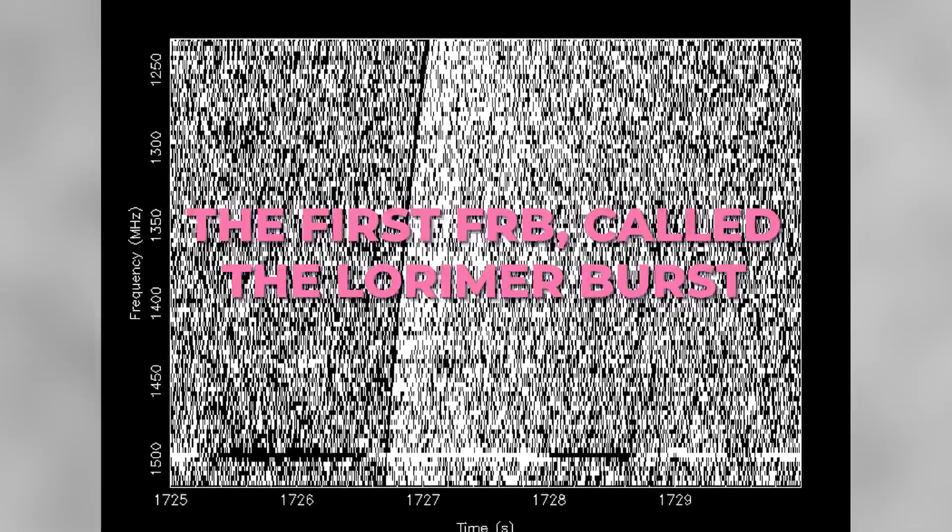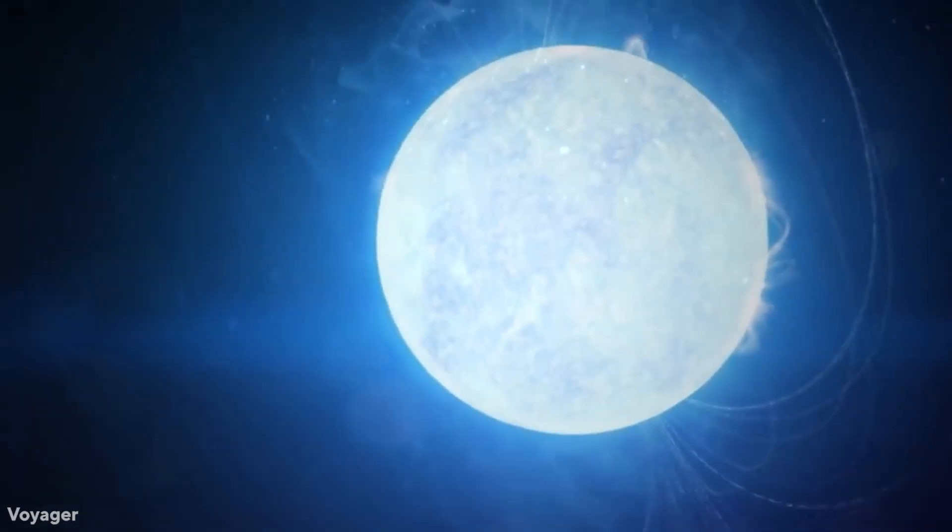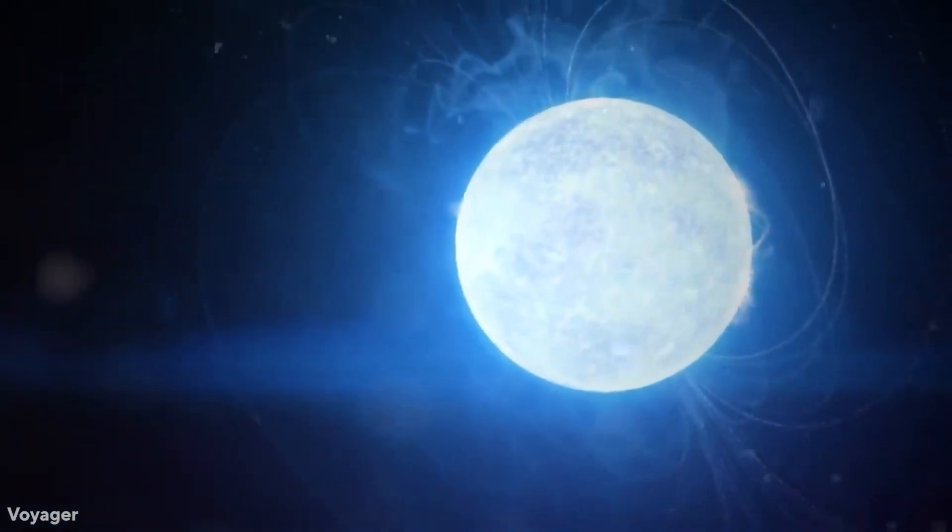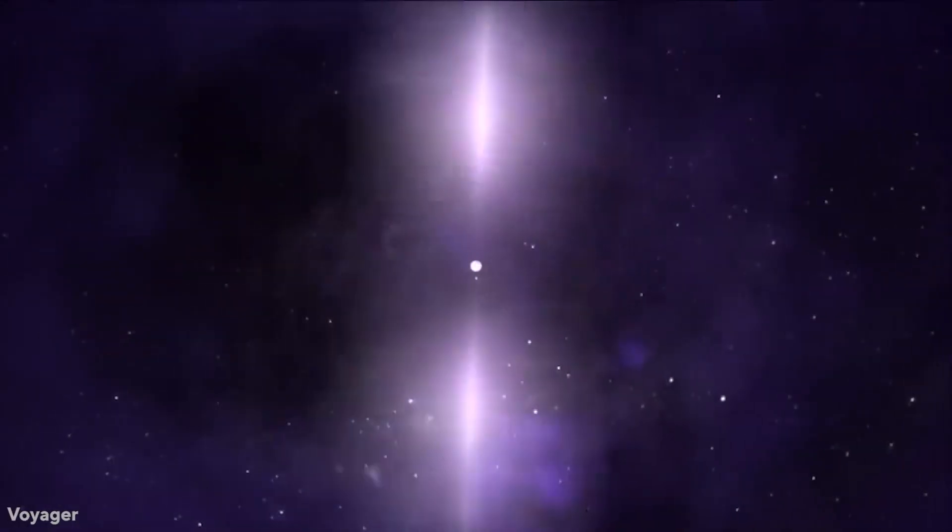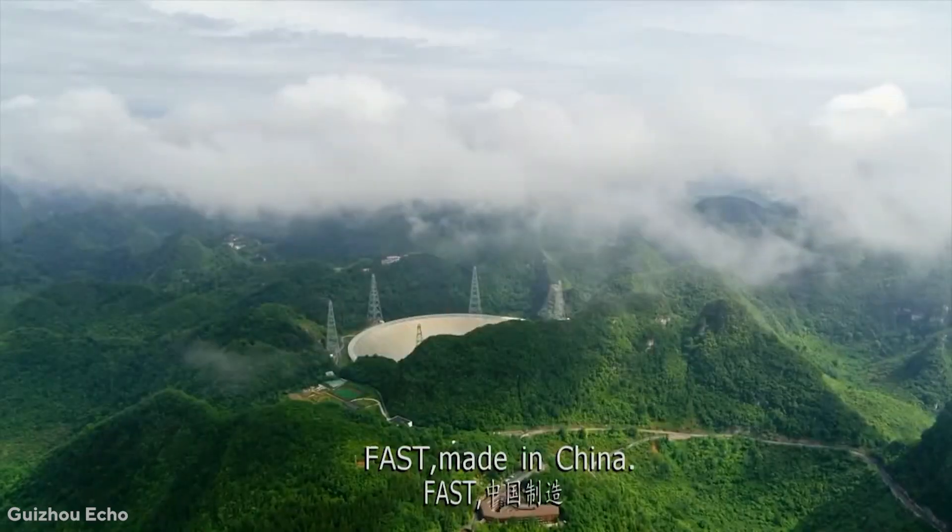The first FRB, called the Lorimer Burst, was discovered as far back as 2007. FRB-20190520B was detected by a 500-meter Aperture Spherical Radio Telescope in China.